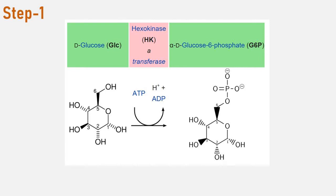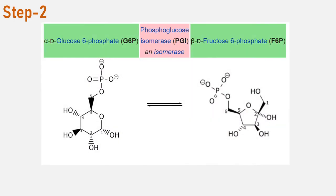Do you remember the six enzyme families we studied earlier? This enzyme belongs to the transferase family. The enzyme glucose-6-phosphate isomerase converts glucose-6-phosphate into fructose-6-phosphate. This enzyme belongs to the isomerase family.